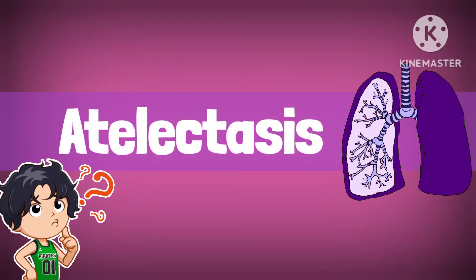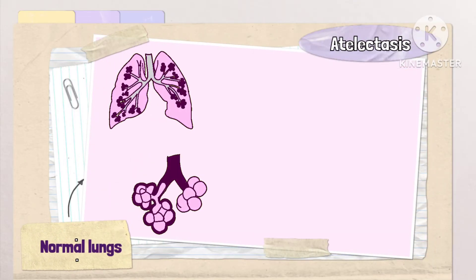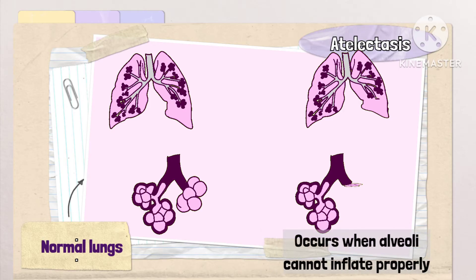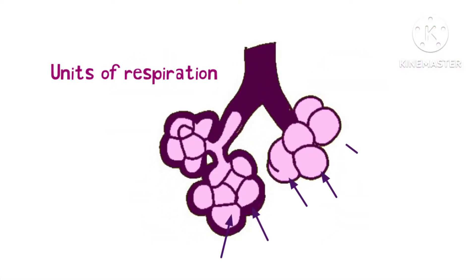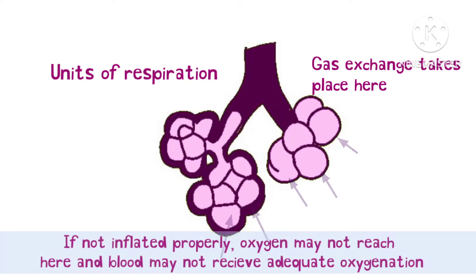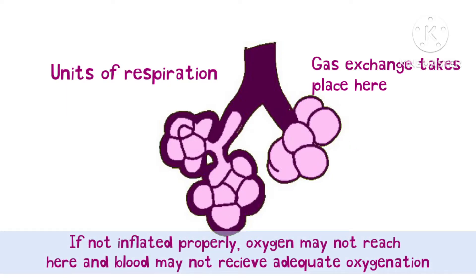Atelectasis refers to the closure or collapse of alveoli. It occurs when the alveoli cannot inflate properly and thus are not able to fill with air completely. Alveoli are the units of our respiratory tract where gas exchange takes place. If they do not receive adequate oxygen or inflate properly, then oxygen may not reach the blood sufficiently, causing further problems.